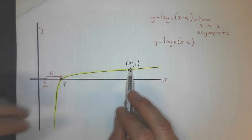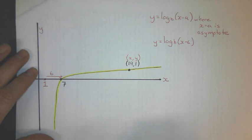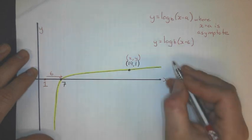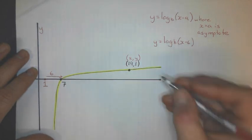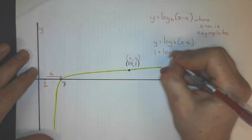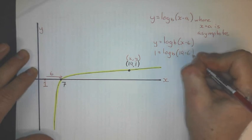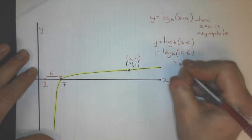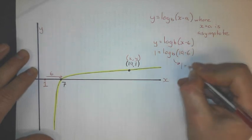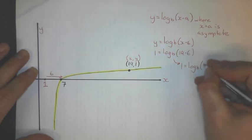And remember, that's x, and that's y. So I'll substitute these values in to solve for the base, and then rewrite the equation. 1 equals log b, and x is 19 minus 6. And I get 1 equals log base b, 19 minus 6 is 13. Yep, 13.